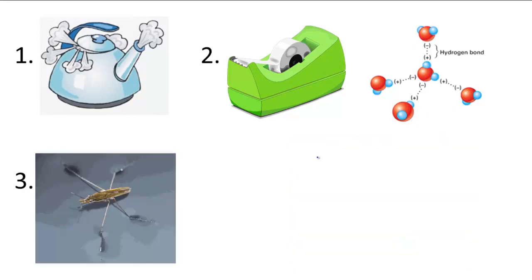Number three, hydrogen bonding gives water high surface tension. If you've ever seen a bug land on the water, it doesn't sink because there's enough tension on the surface of the water to support the bug's weight.